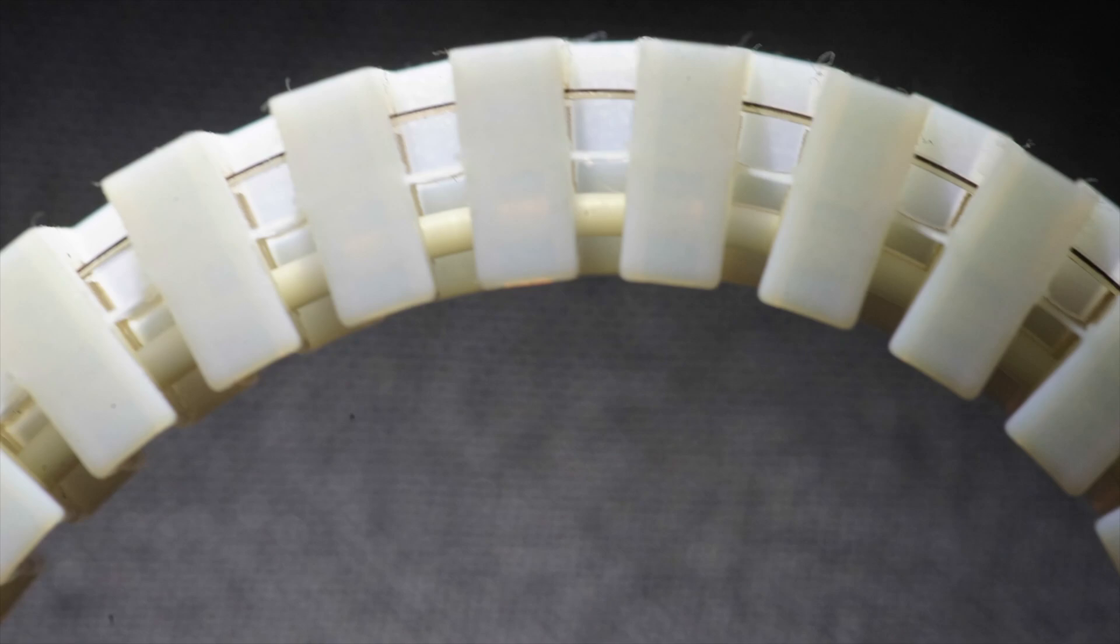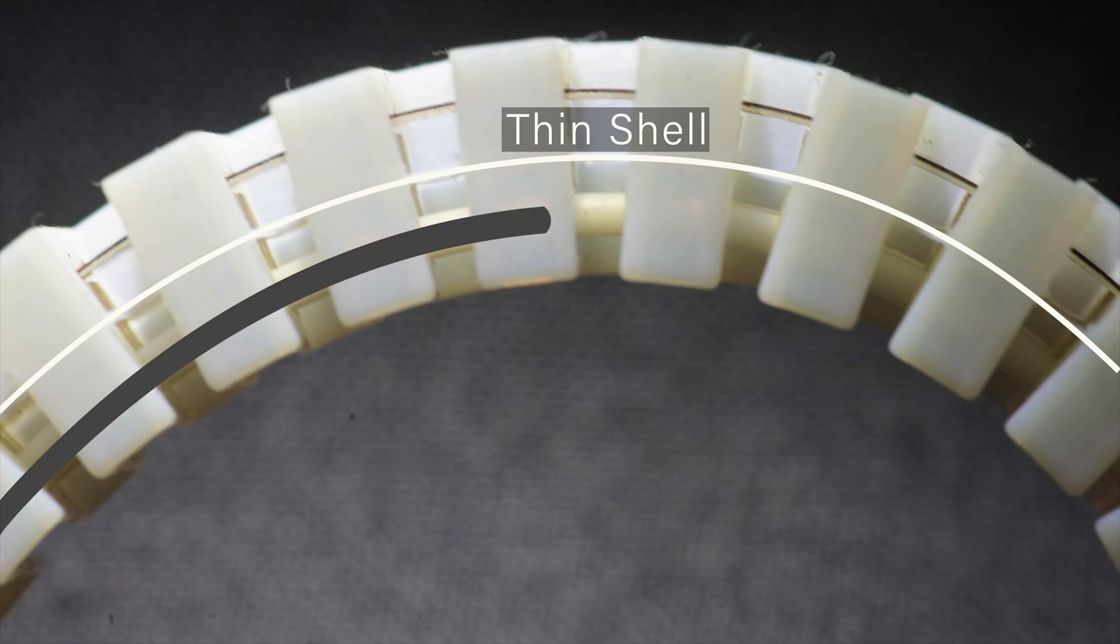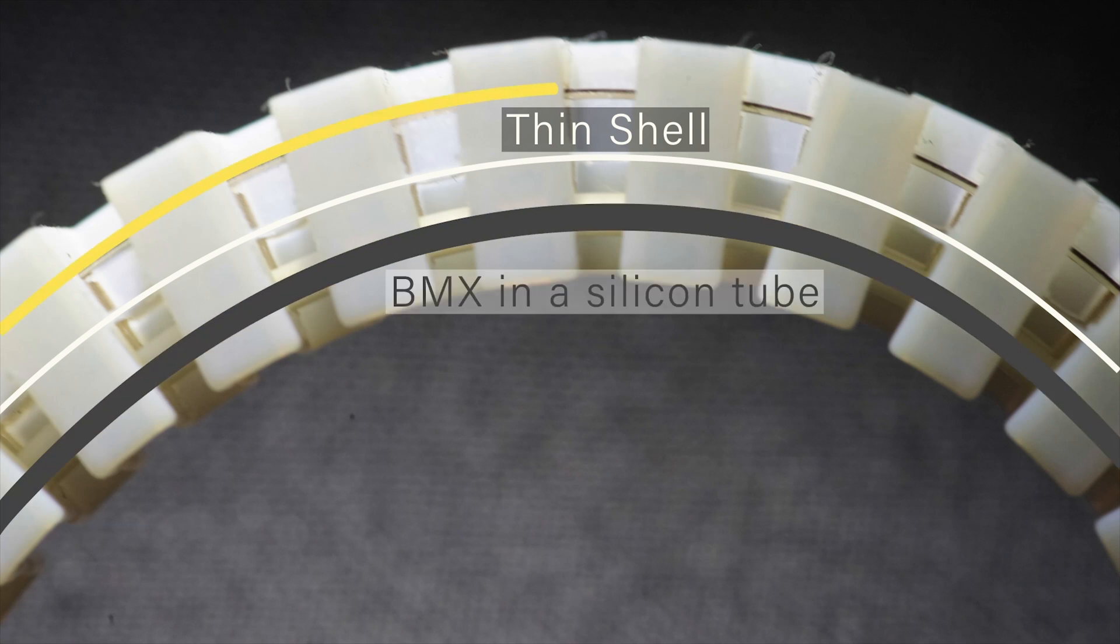Next, we will explain how to create and control Coded Skeleton using this structure. Coded Skeleton can be created by inserting a shape memory alloy and a flex sensor inside. By using the isolated structure for the body, it is possible to actuate with a shape memory alloy with high degree of freedom.